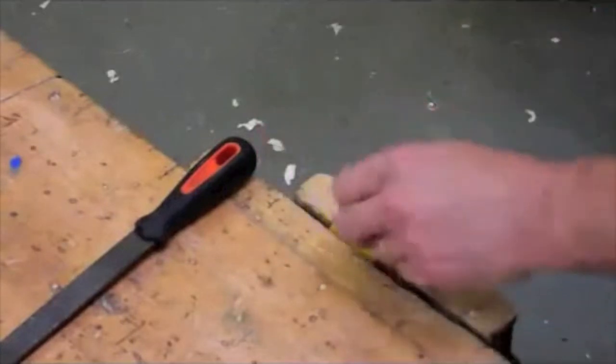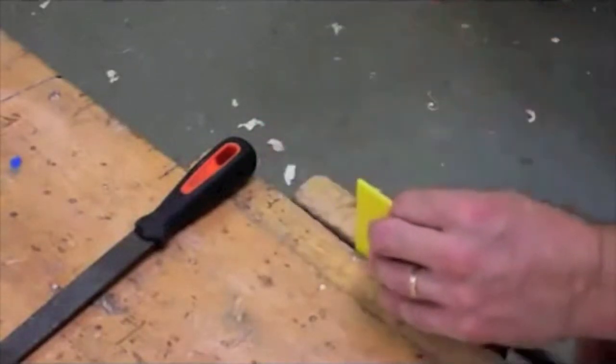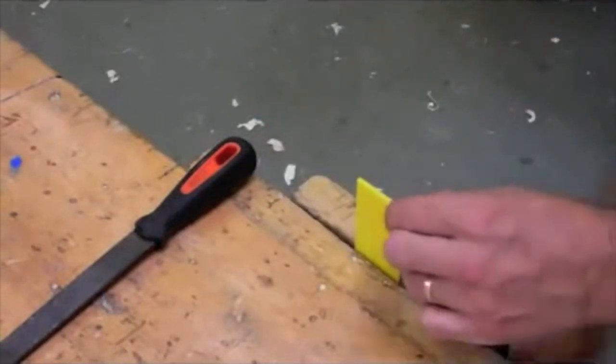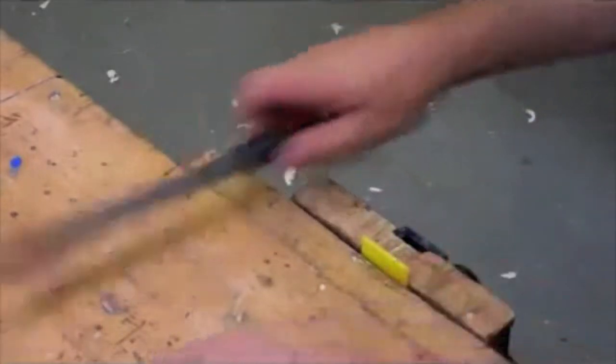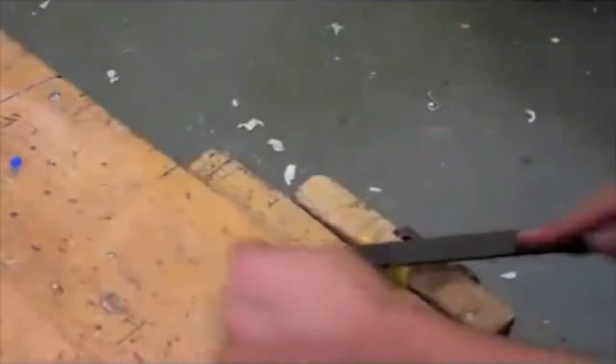Turn the work over. Notice that we place it low down in the vise. High up like this, it'll flex. Place it low, securely supported, much better for filing.